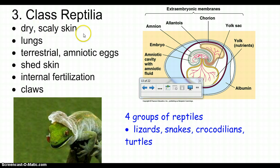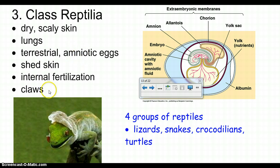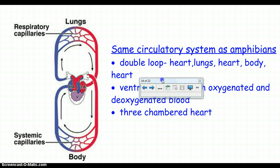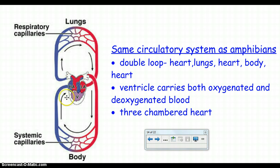Reptiles have dry, scaly skin. They still have lungs and are terrestrial. They have amniotic eggs — since they lay eggs, the eggs need food. They use a yolk as nutrients while waiting to hatch, with an amnion surrounding the embryo with amniotic fluid. Reptiles differ from amphibians in that they do internal fertilization instead of external, have dry scaly skin, are only terrestrial, lay eggs on land, and have claws. There are four groups of reptiles: lizards, snakes, crocodilians, and turtles. Reptiles have the same circulatory system as amphibians — two loops, three chambers.